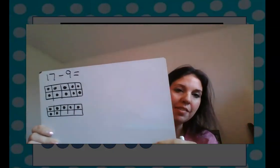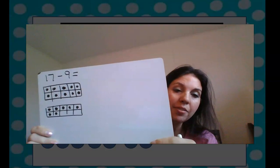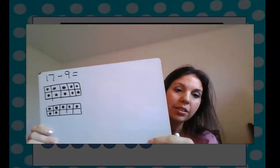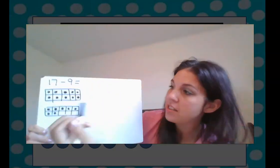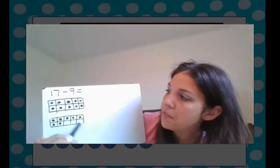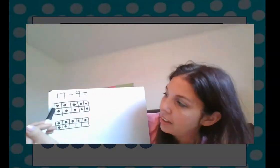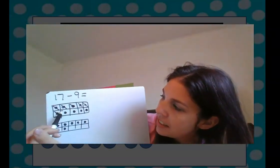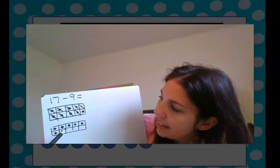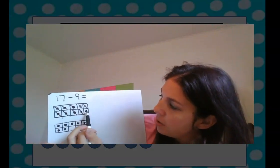So I drew 17 and now I have to cross out how many? 9. I have to cross out 9. So I'm going to start right up here with my big group of 10 and I'm going to take away 9. 1, 2, 3, 4, 5, 6, 7, 8, 9.